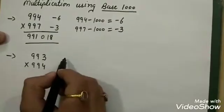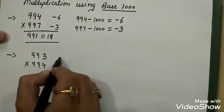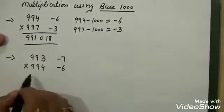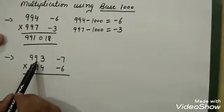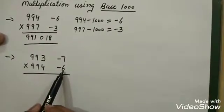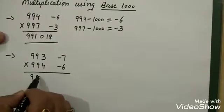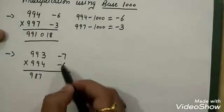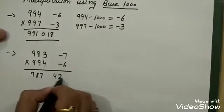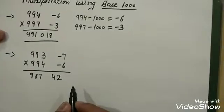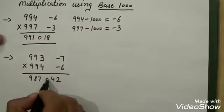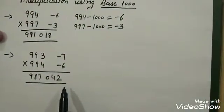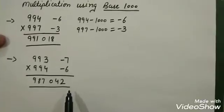993 minus 1000 gives minus 7, and 994 minus 1000 gives minus 6. Now, 993 minus 6 is 987, and 994 minus 7 is also 987. Then 7 sixes are 42 — minus minus changes to plus. Since we are using base 1000, we place a leading zero to get 042. The final answer is 987042. That's how we do these calculations using base 1000.